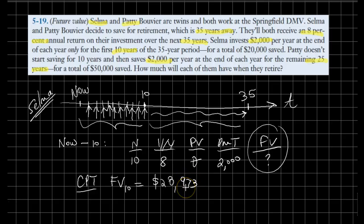$28,973, but we're not done yet. Recall that this is how much money accumulated by the end of year 10. Now she will have an 8% return on her investment for the remaining 25 years, even though she is no longer depositing constant amounts.